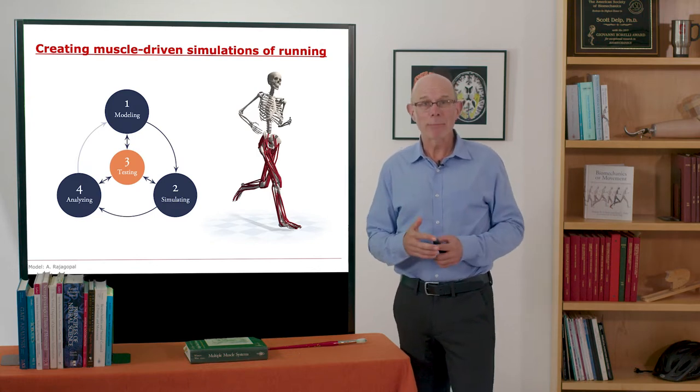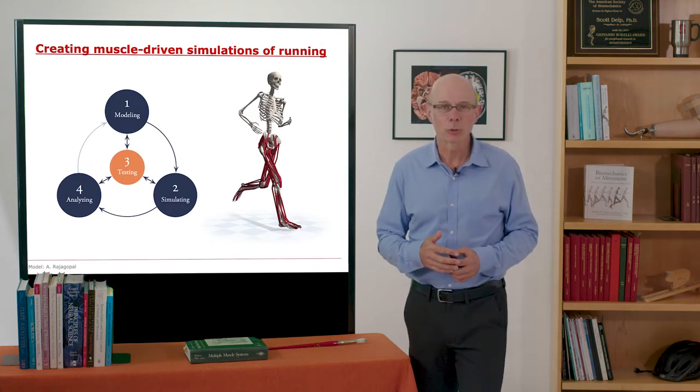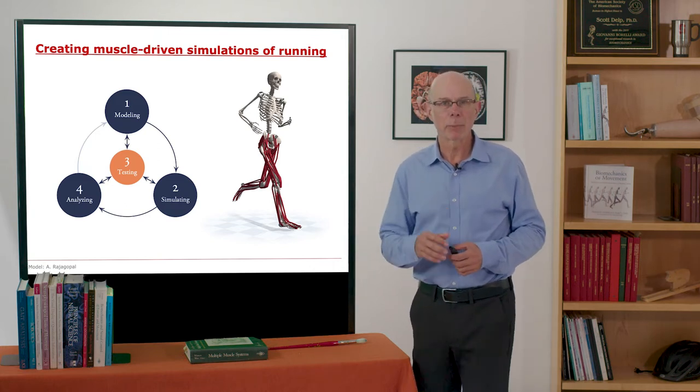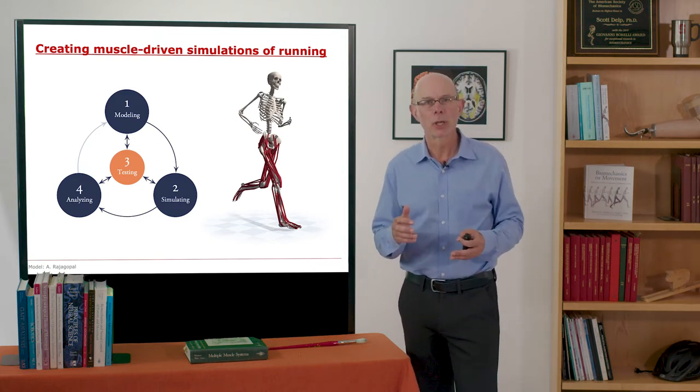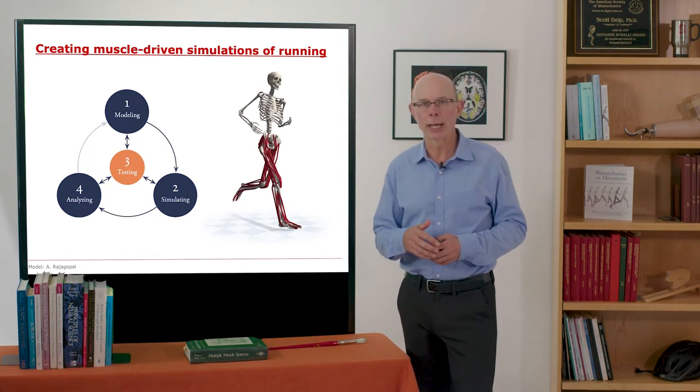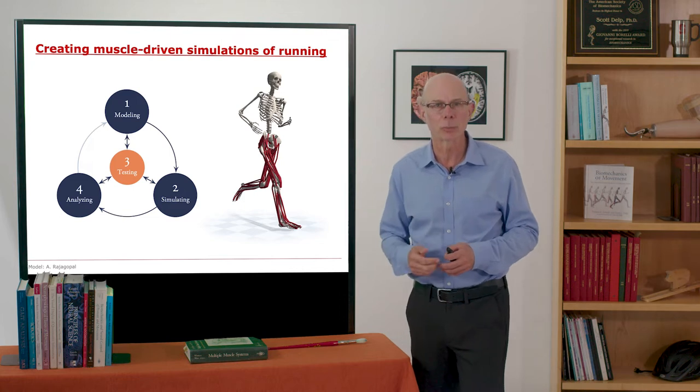A graduate student at the time, Sam Hamner, created muscle-driven simulations of running by first measuring the body segment motions, ground reaction forces, and EMG patterns of key muscles as experienced runners ran on a treadmill at 2, 3, 4, and 5 meters per second.